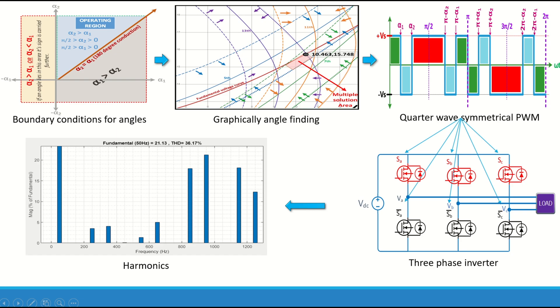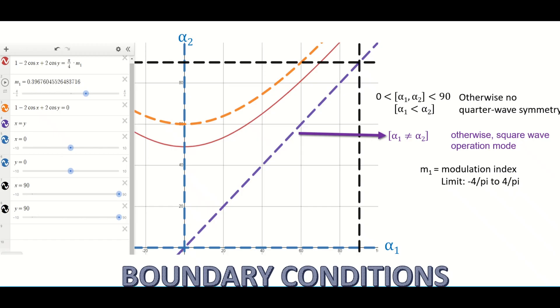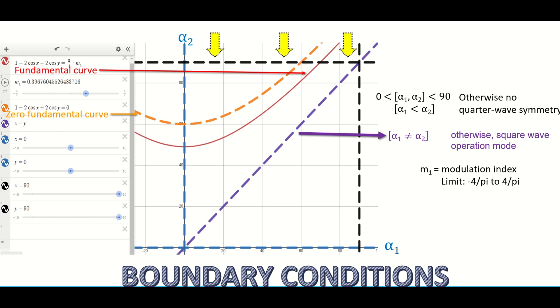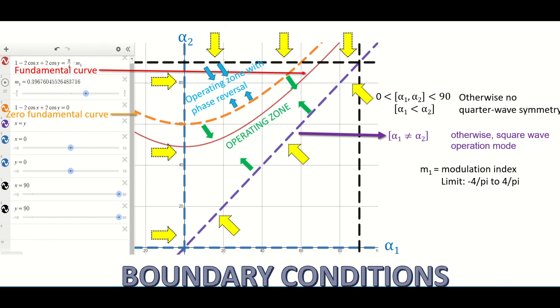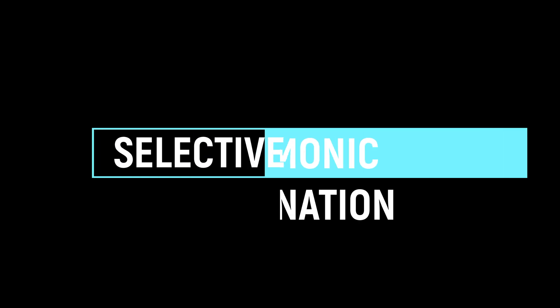For the boundary conditions, make quarter wave symmetry feasible and prevent square mode operation. There are two regions: regular operation and operation with phase reversal, as depicted.